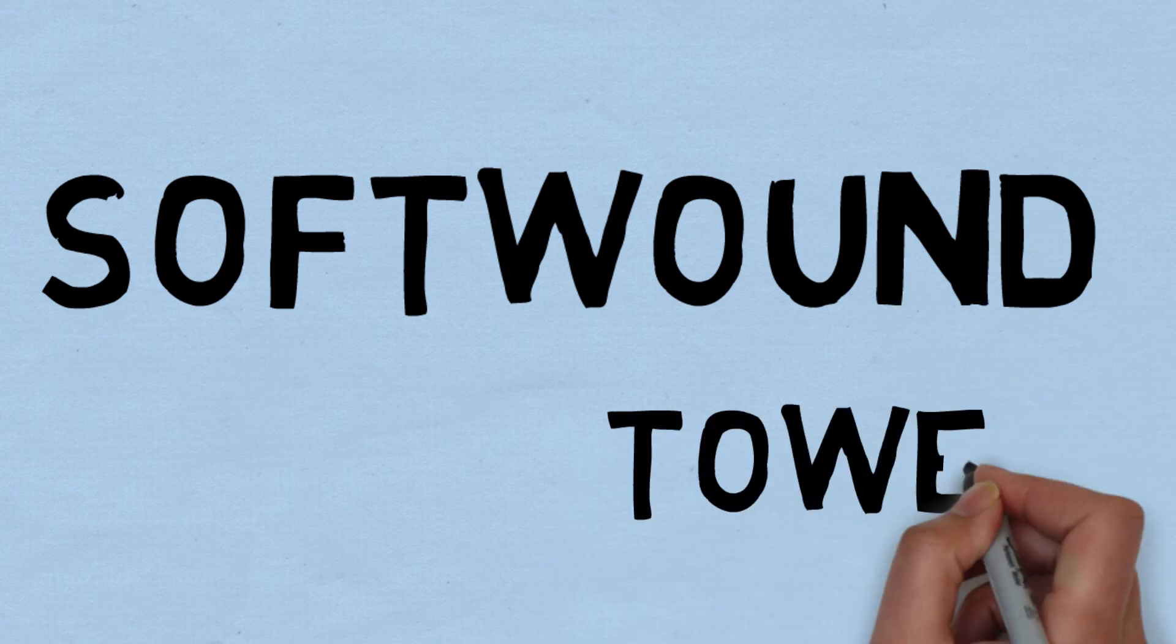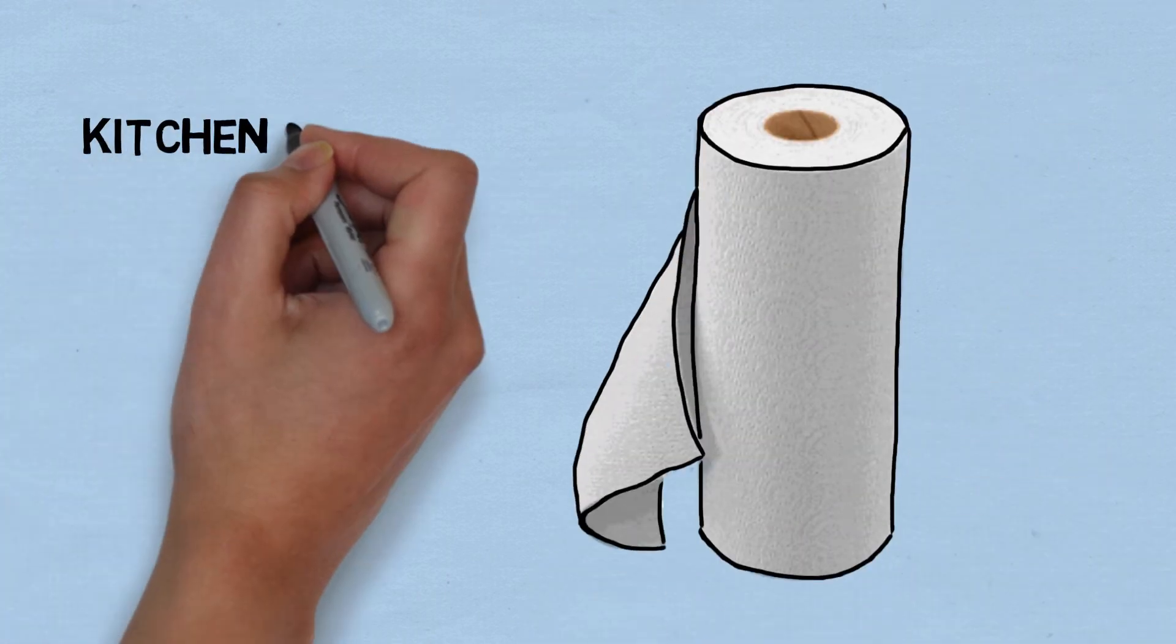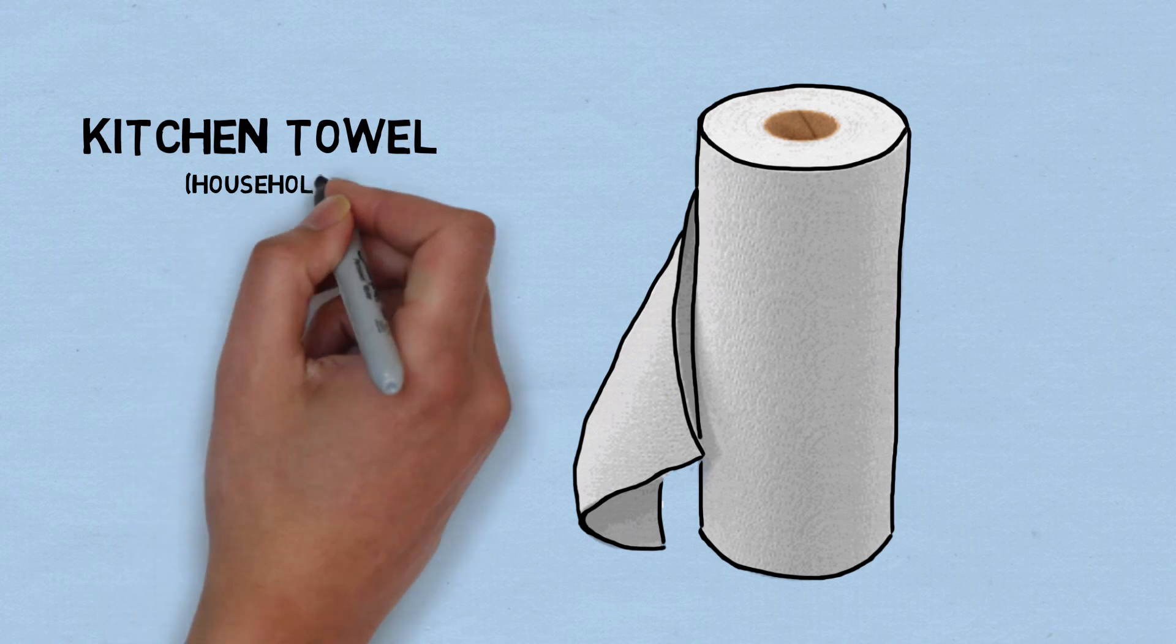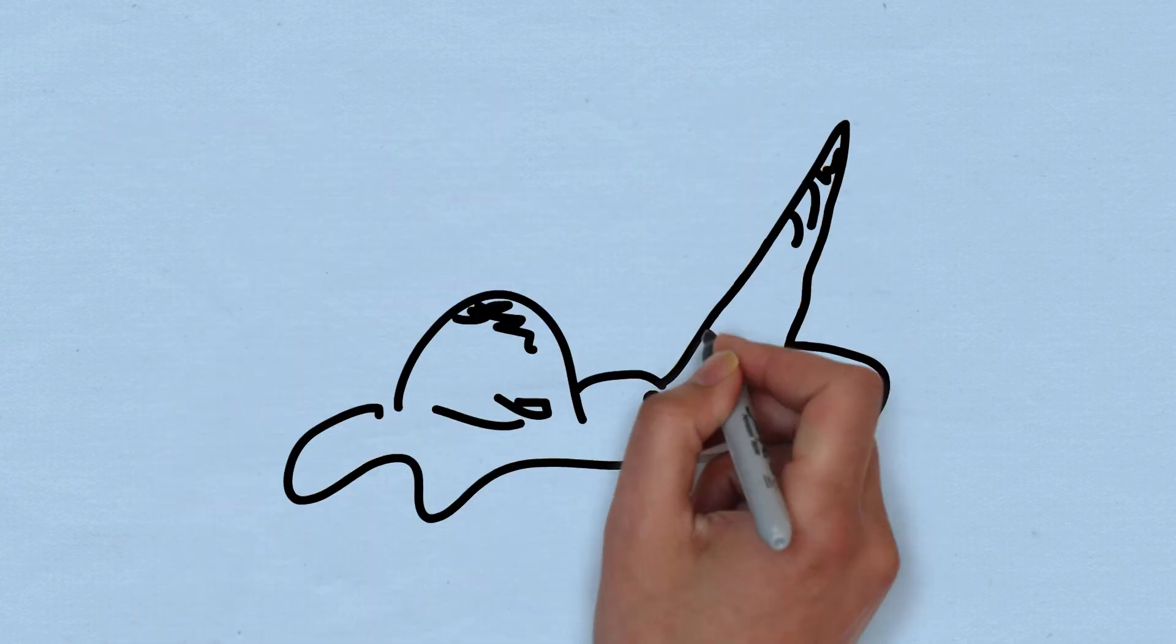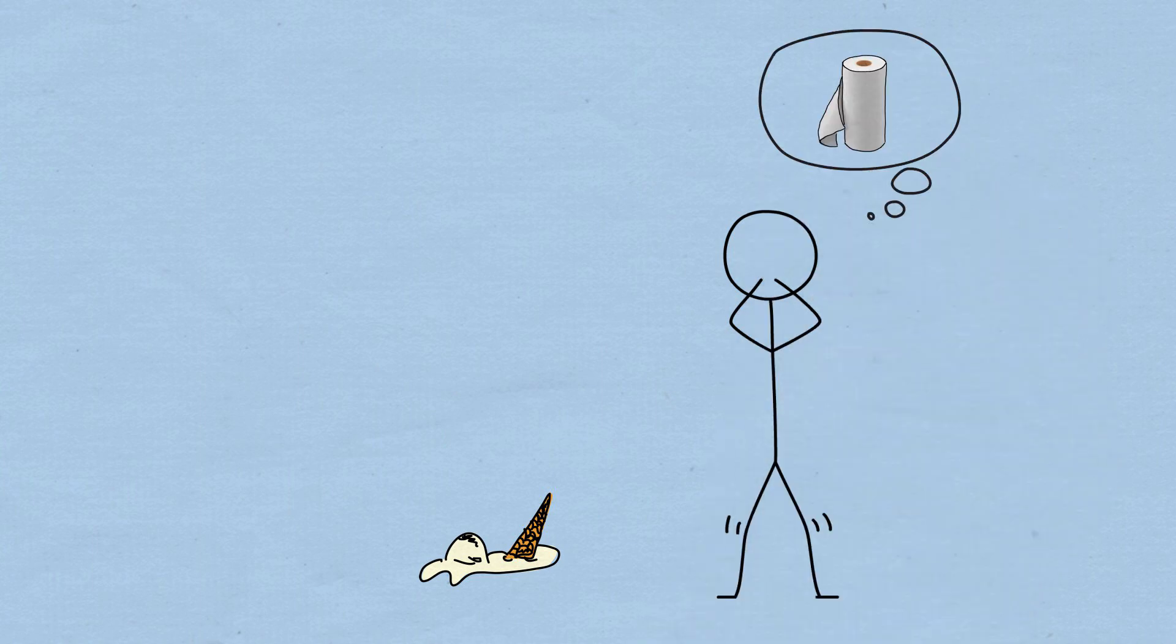Soft-wound towels, on the other hand, often referred to as kitchen towels or household towels, come in rolls of about 65 to 85 sheets and are usually used in the home or for smaller cleaning and kitchen needs. They are usually two-ply and are embossed to add thickness and texture.